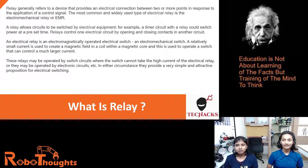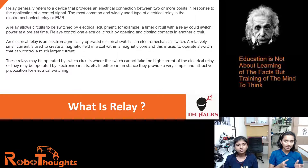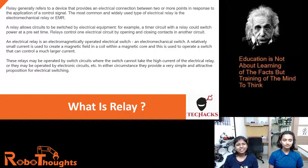The most common and widely used type of electrical relay is the electromechanical relay, or EMR. A relay allows a circuit to be switched by electrical equipment — for example, a timer circuit with a relay could switch power at a preset time. A relay controls one electrical circuit by opening and closing contacts in another circuit.